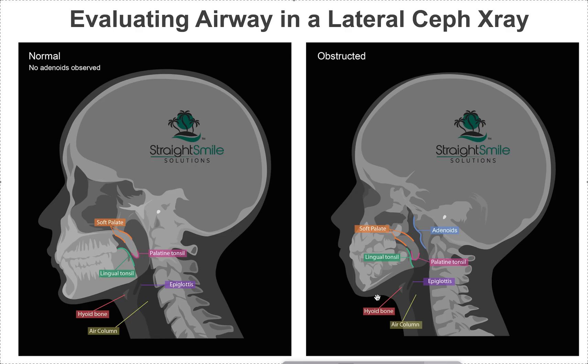This is something you want to screen because you cannot correct the patient orthodontically if they do not have a proper airway — they're always going to be growing in the wrong direction. So this is something you want to flag in little kids: threes, fours, fives, sixes, sevens, and start getting involved.